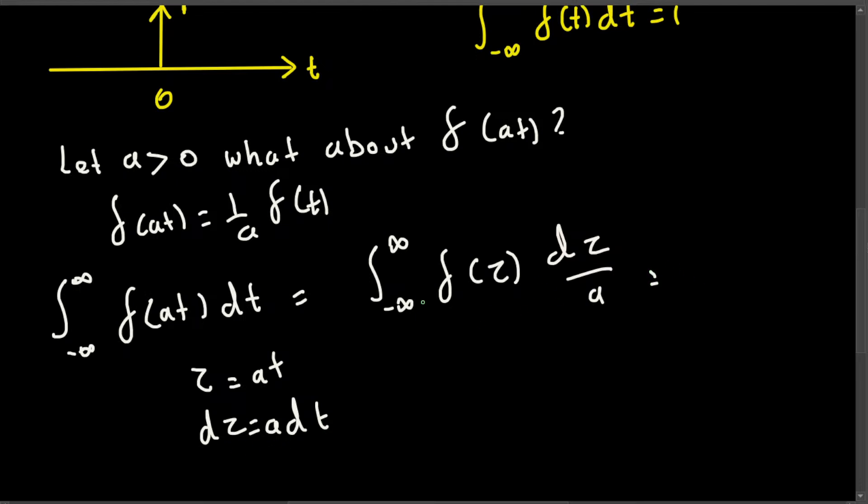Now we are only integrating with respect to tau, so 1 over a is a constant and I can move that in front of the integration. So this is going to be 1 over a times the integration from negative infinity to infinity delta of tau d tau.